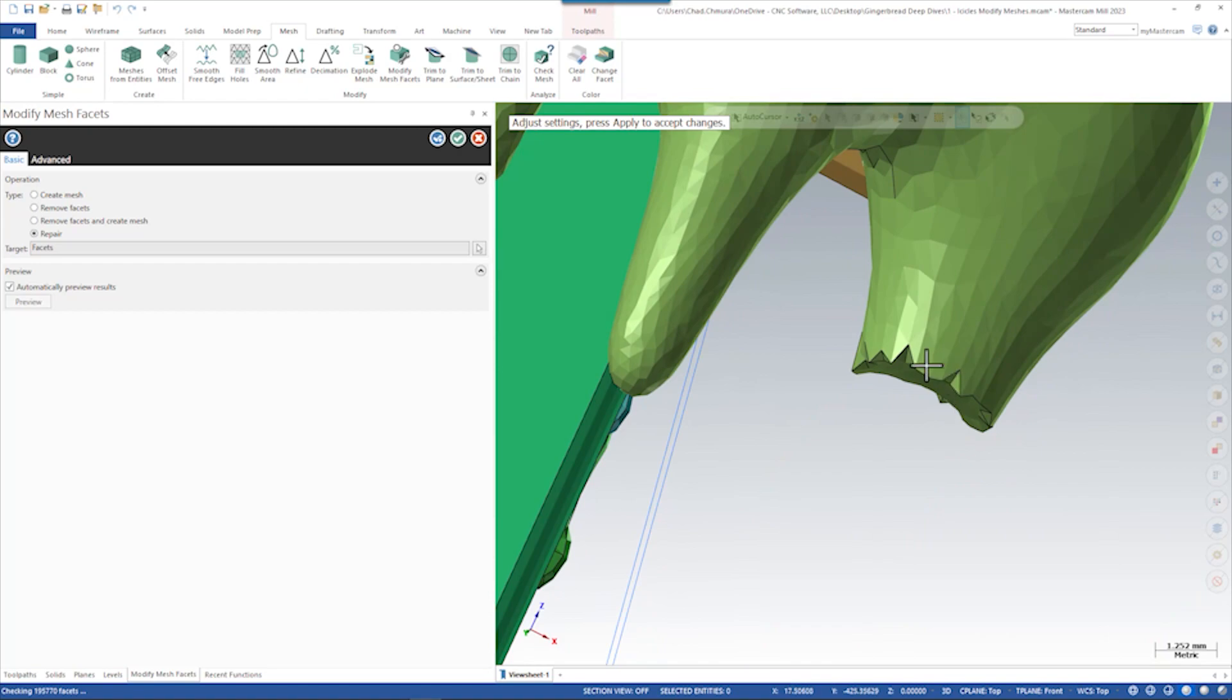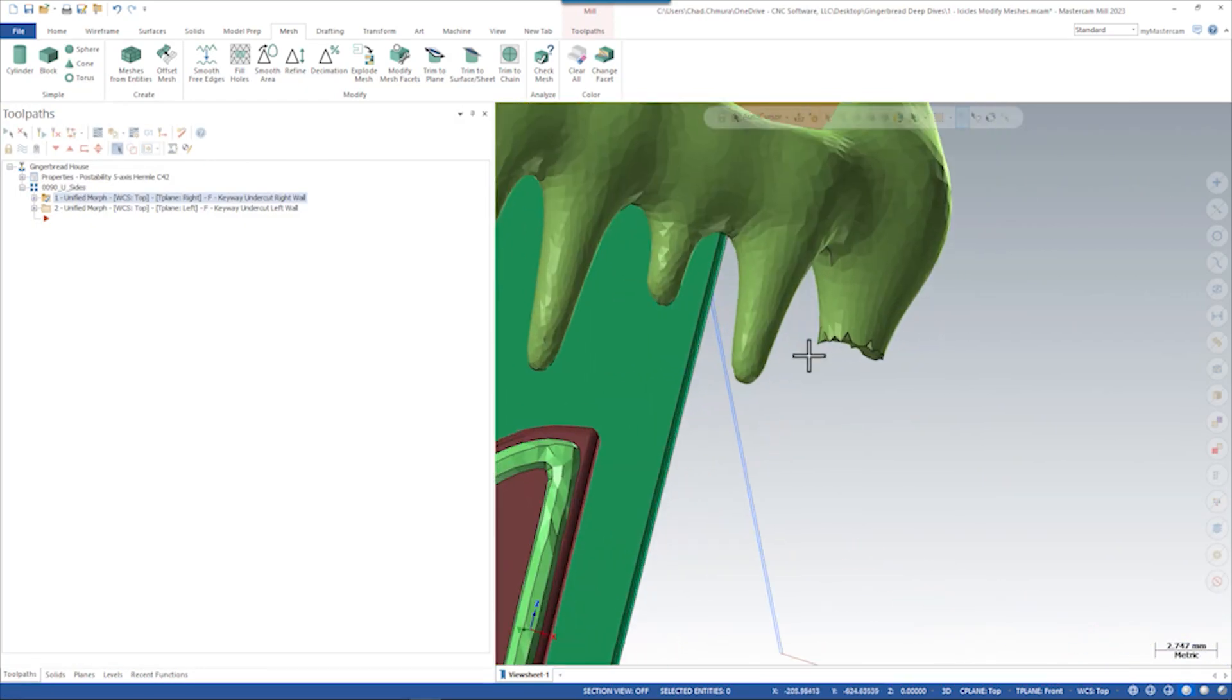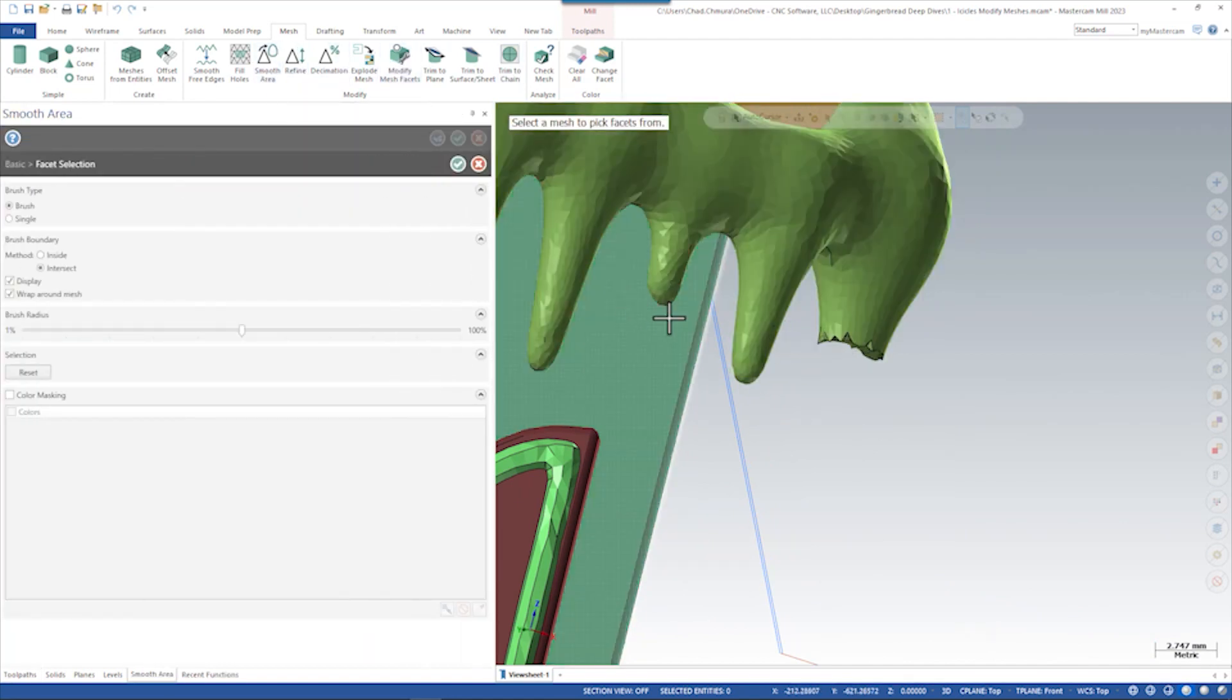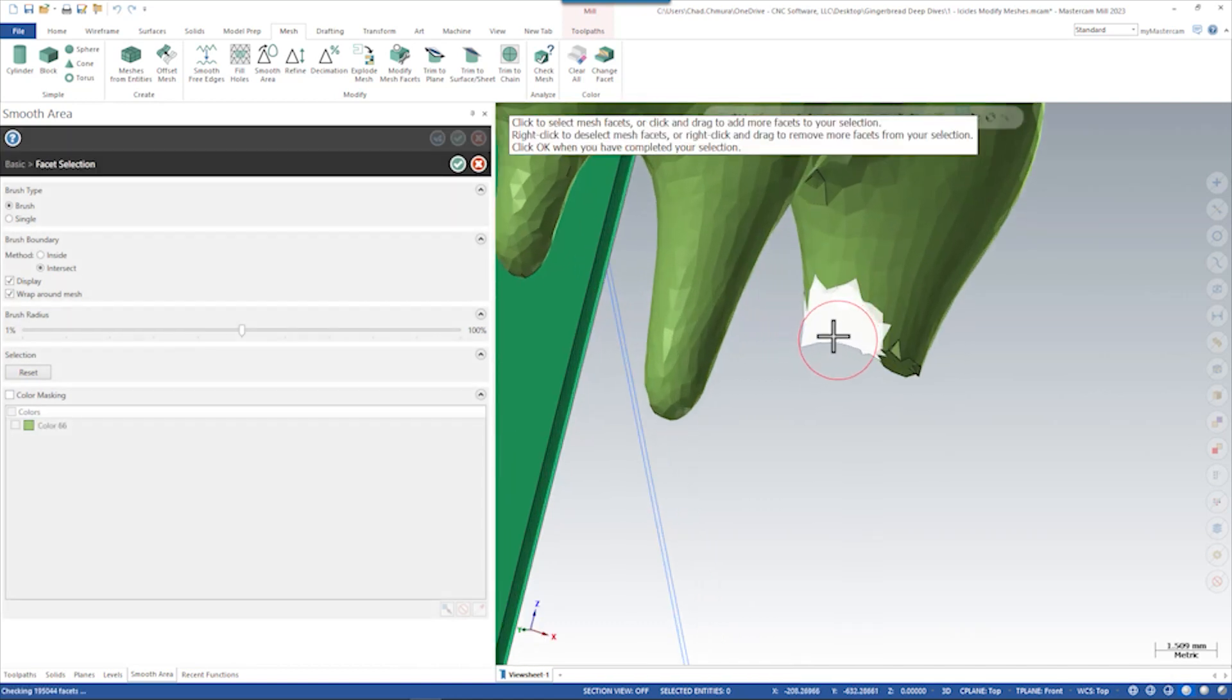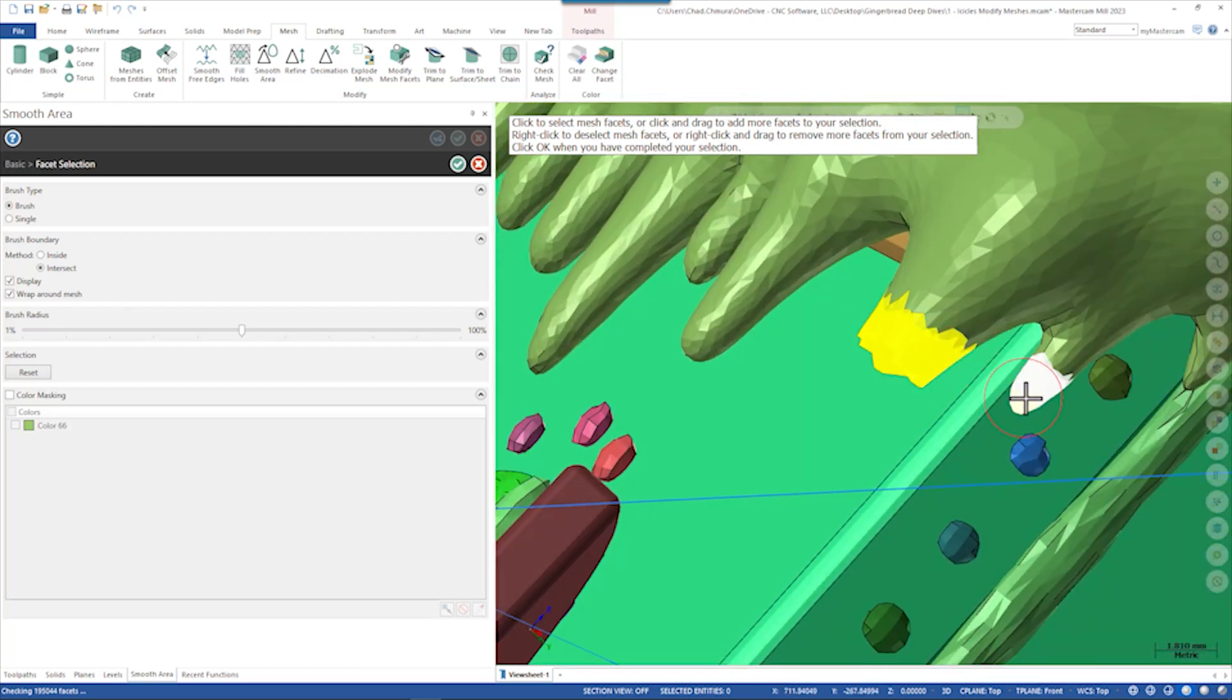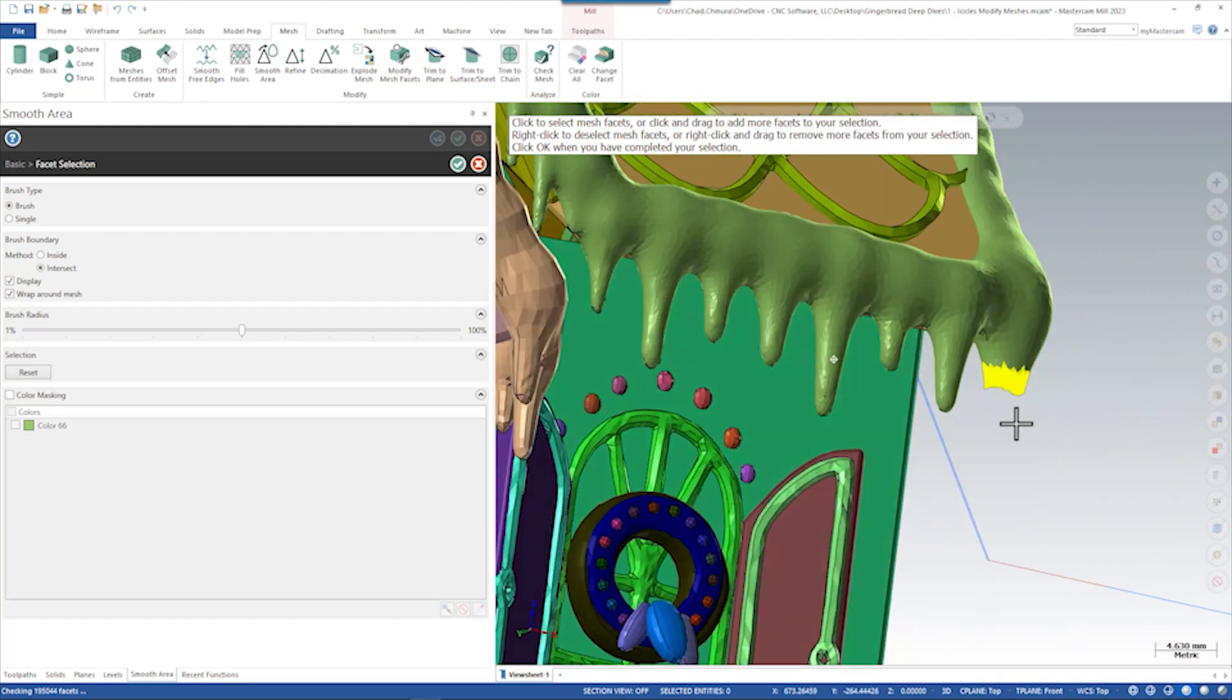In this instance, the last thing we have to do to this icicle is run smooth area once more with some individual facet selection instead of picking the entire mesh. Now I can basically focus on the lower area of this mesh and say okay, I want to smooth all these. I can right-click and drag to unselect any neighboring facets I may have selected.